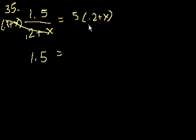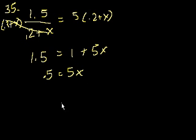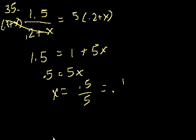It's 1. 0.2 is the same thing as 20% or 1 fifth. So it's 5 times 1 fifth. It's 1. Plus 5x. Subtract 1 from both sides. You have 0.5. 1.5 minus 1 is 0.5. Is equal to 5x. So x is equal to 0.5 divided by 5. Well, that's just equal to 0.1. The answer is B.